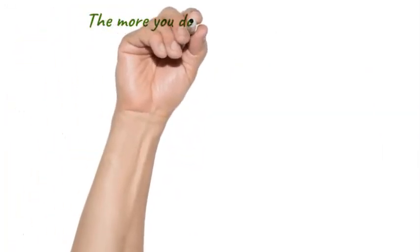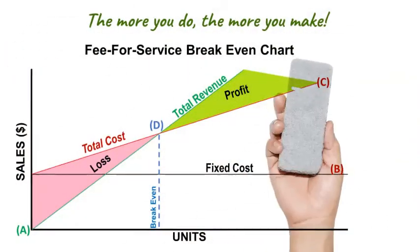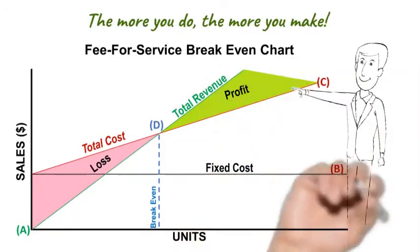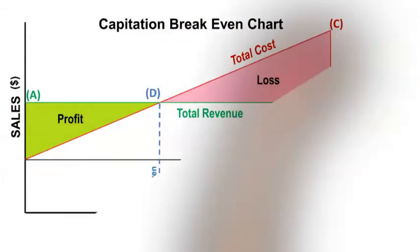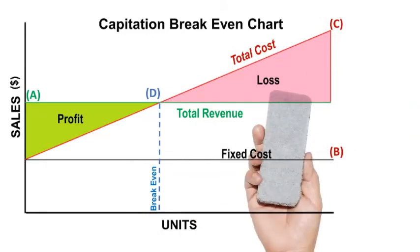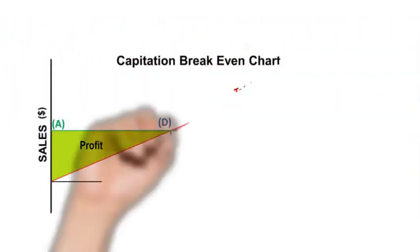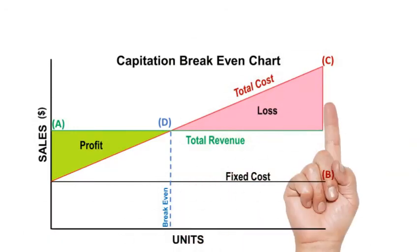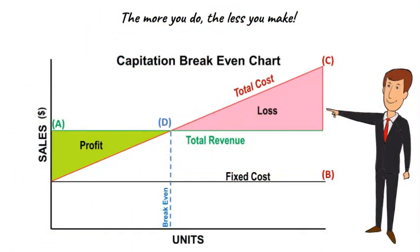Under fee-for-service reimbursement, more patient procedures means higher revenues for the provider. Conversely, under capitation, providers get a fixed sum for a cohort of patients, as represented by line A. The total cost line remains the same as in the fee-for-service graphic. Under capitation, the more you do the less you make, and losses are unlimited without utilization control mechanisms in place.